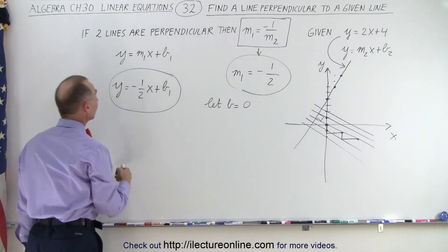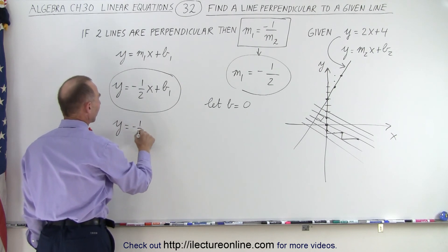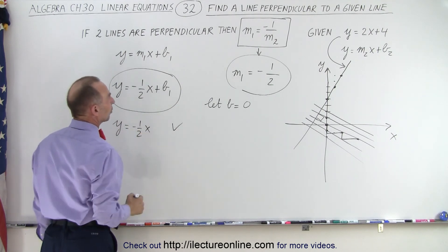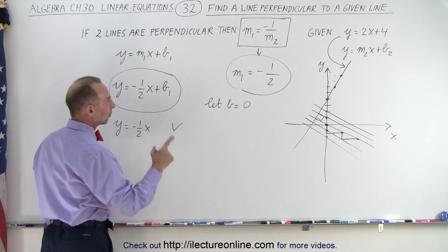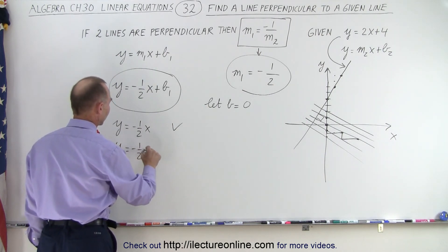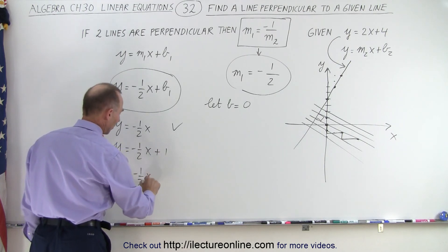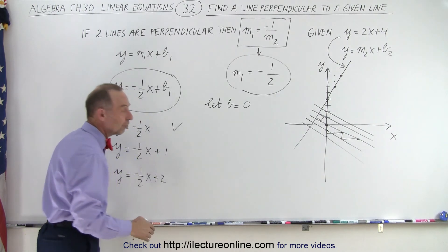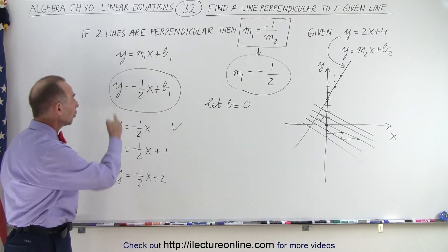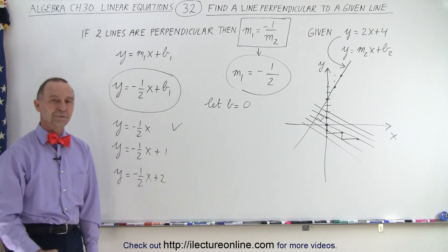So given that, we can say that y equals minus 1 half x is a good equation that's perpendicular to the first line, or y is equal to negative 1 half x plus 1, or y is equal to negative 1 half x plus 2, and so forth. It doesn't matter what we call b. All of those are lines that are perpendicular to the given line, and that is how it's done.